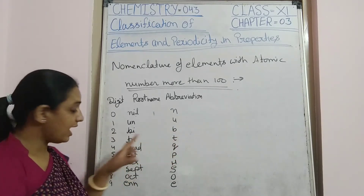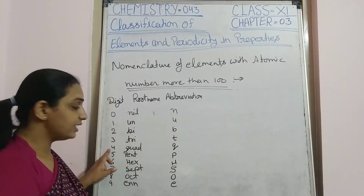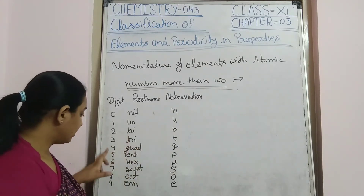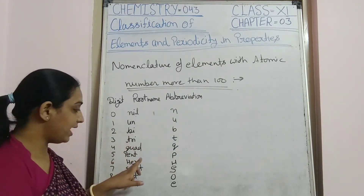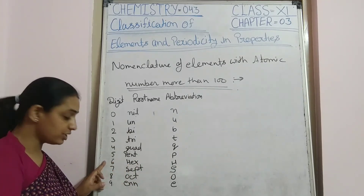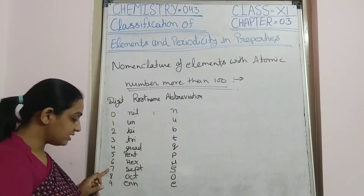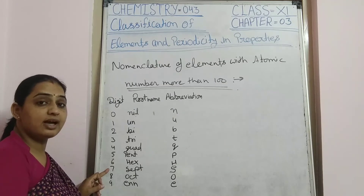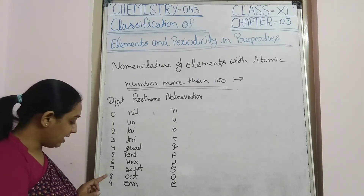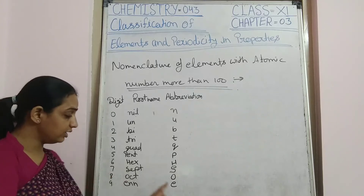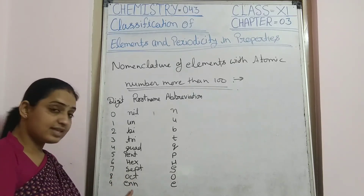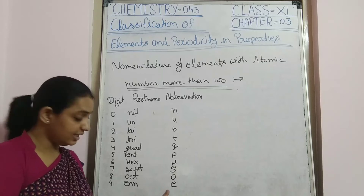Three is 'tri' (t), four is 'quad' (q), five is 'pent' (p), six is 'hex' (h), seven is 'sept' (s), eight is 'oct' (o), nine is 'en' (e).